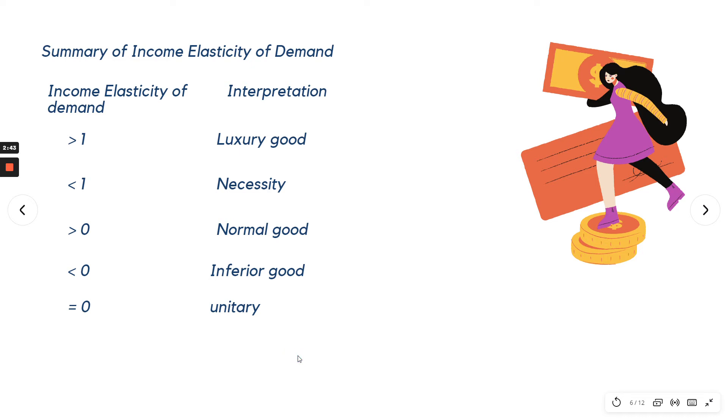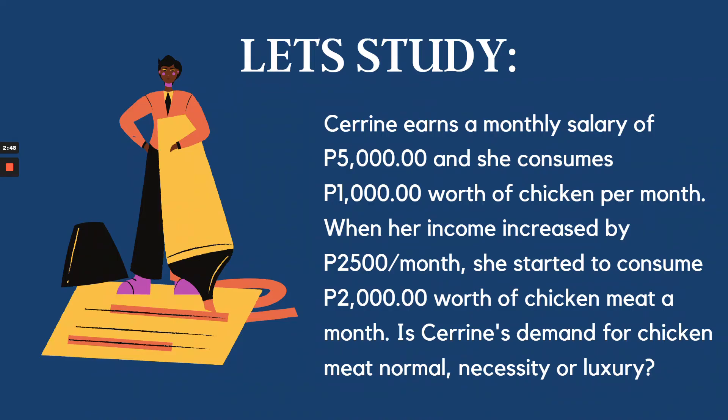Let's put this into application. In this situation, Cerrine earns a monthly salary of 5,000 pesos and she consumes 1,000 worth of chicken per month. When her income increased by 2,500, so it became 7,500 per month, she started to consume 2,000 worth of chicken meat a month.